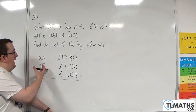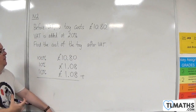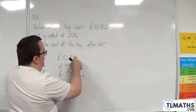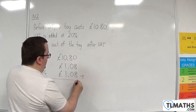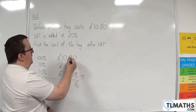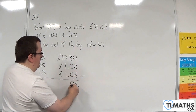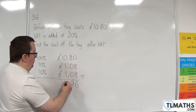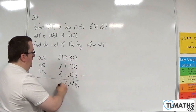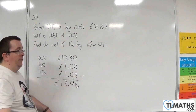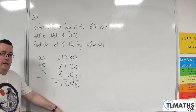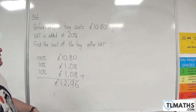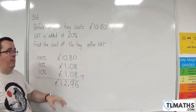Then what I could do is add those three amounts together — that will give me the hundred percent plus the twenty percent I've added. So I have: zero plus eight plus eight is sixteen, put down the six carry the one, eight plus one is nine, put down the decimal point, zero plus one plus one is two, and I've got the one — so we get twelve pounds ninety six.